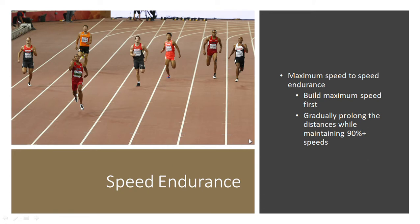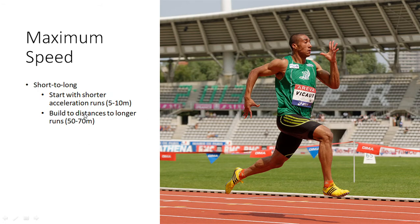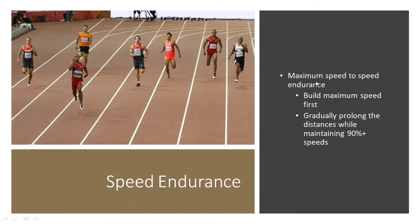Moving on to speed endurance — the strategy here is to start with maximum speed training, or gradually build up to it, just like in the maximum speed periodization strategy, and then continually increase the distance in order to transition into that speed endurance phase. We want to build maximum speed first, get as fast as possible, and then over time prolong the distances while ensuring we're still maintaining 90% plus speeds during those efforts, building the ability to travel at a quick pace over longer distances.